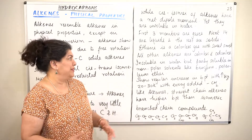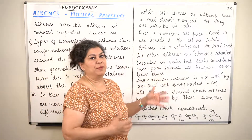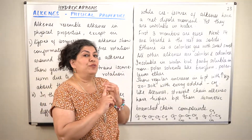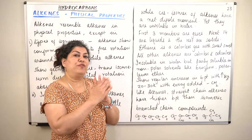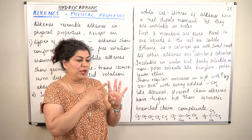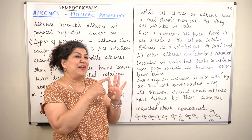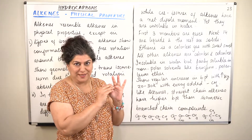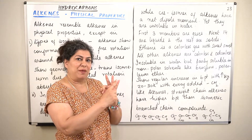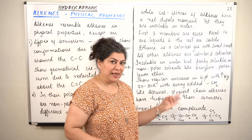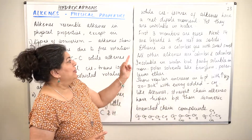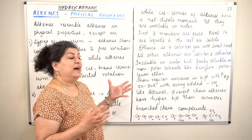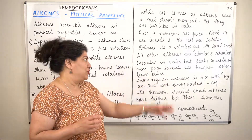Coming to the other physical properties which are very similar to those of alkanes: the first three members — ethene, propene, and butene — are gases. This is because methane has no alkene equivalent that is stable. From carbon-5 to carbon-17, the next members are liquids, and carbon-18 onwards they are solids. That is very similar to alkanes.